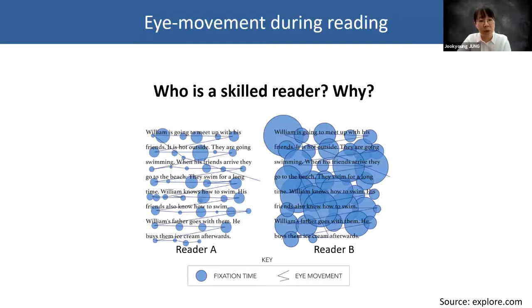By contrast, Reader B shows slower word recognition and more frequent regression, perhaps indicating this reader is not quite skilled in processing sentences written in English. Excellent, very good.